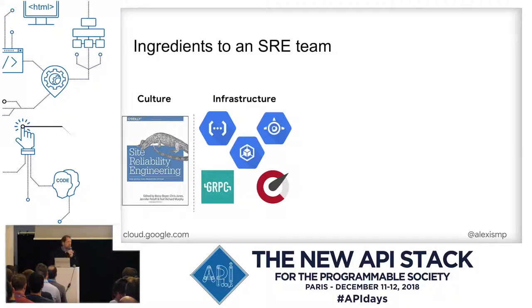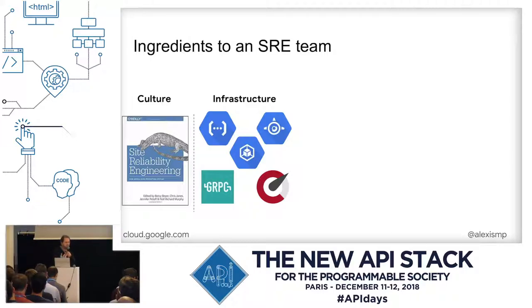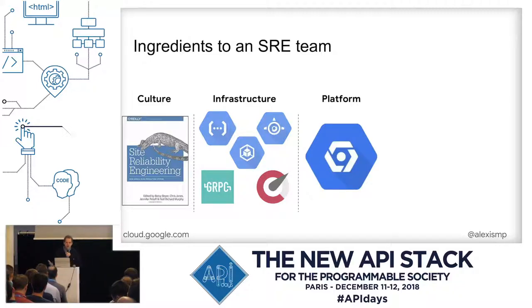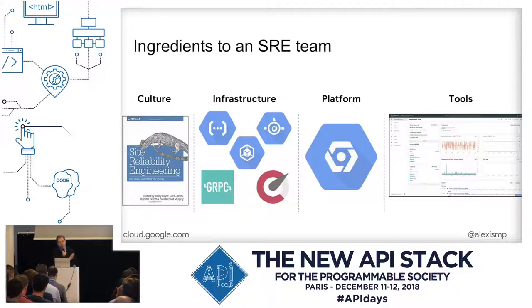Because for one SRE there are 20 engineers, the SRE cannot go and tell everyone individually what to log or expose. So they need to be quite opinionated about what needs to be there — making sure services all have names, versions, and expose a number of things by default. It's fairly opinionated, but that's the only way to operate at that scale. Then there's a platform — essentially a time-series database where potentially amazingly large amounts of data are logged — and only then do we have tools that show the results, from culture to platform with all the opinionated frameworks for logging, tracing, and so forth.